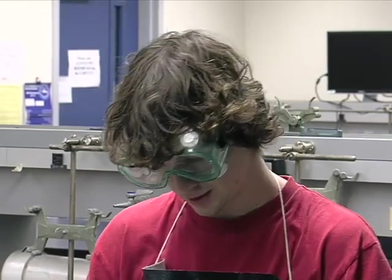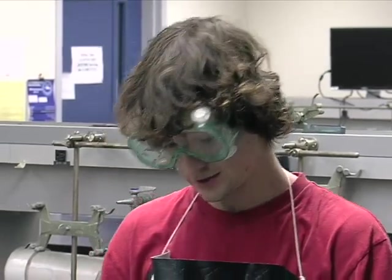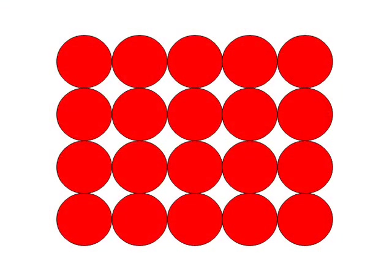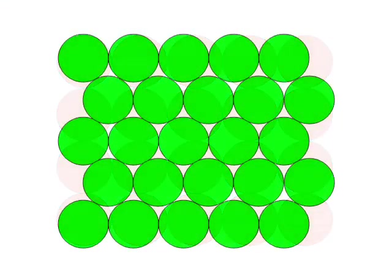In order to classify crystalline solids, we use unit cells, which are the smallest segments of atoms that you can make to represent a crystalline solid by just repeating it over and over. Unit cells are determined by the type of layer, such as square array layer, seen here, or close-packed array, seen here.